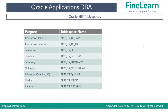When you install Oracle E-Business Suite, several tablespaces are also created. The most used and default tablespace for all users created in E-Business Suite is APPS_TS_TX_DATA, which is the main transaction tablespace. There are also separate tablespaces for indexes, reference, interface, summary, logging, queues, media — for images and LOBs — and archive. Each type of data is stored in a different tablespace.